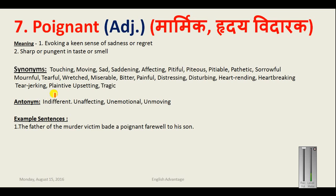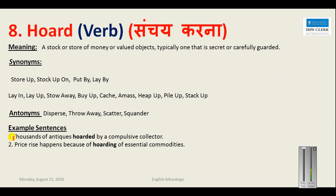Important synonyms from this list include miserable, mournful, and pathetic. The antonyms for poignant are indifferent, unaffecting, unemotional, and unmoving. Example sentence: 'The father of the murder victim bade a poignant farewell to his son.' So poignant means something very touching, moving, or saddening, and secondly sharp or pungent in taste or smell.